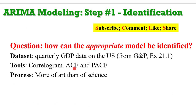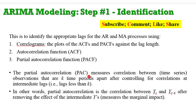The tools you require for the identification process are the correlogram, the ACF, and the PACF. You must have heard that the process of identification is more of an art than a science — two people can look at the same data and come up with different ARIMA models. To identify the appropriate lags for the AR and MA process, you will require the correlogram, the autocorrelation function, and the partial autocorrelation function. The correlogram is simply the plot of the ACF and PACF against the lag length of the series.